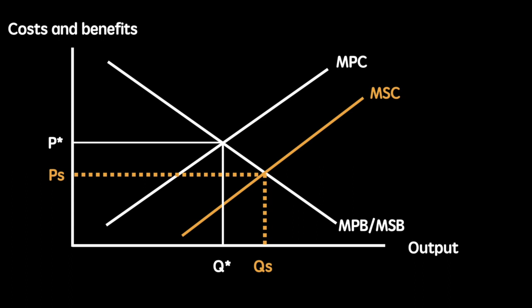The welfare loss in this scenario is represented by the triangle XYZ. Starting at our initial equilibrium point, we note that the marginal social cost Y is lower than the marginal social benefit X, and therefore production should continue. If we continue until marginal social benefit equals marginal social cost, we find that the free market allocation leaves us with a deadweight or welfare loss of triangle XYZ.